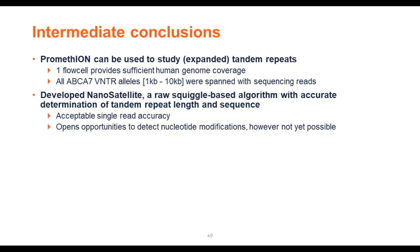We can also distinguish homozygotes: one individual showed only one fragment on southern blotting, suggesting either two VNTR alleles of the same length or one missed allele. After sequencing, looking at the sequence of the tandem repeat alleles reveals clearly two groups of alleles with similar length, confirming this individual has a homozygous VNTR length. In conclusion, Promethion can study expanded tandem repeats in human genomes: one flow cell provides sufficient coverage, we spanned all tested tandem repeat alleles from 1 KB to more than 10 KB, and our Nanosatellite algorithm achieves high accuracy and precision for both length and sequence determination.